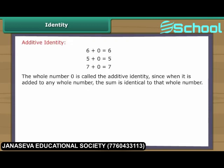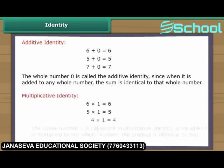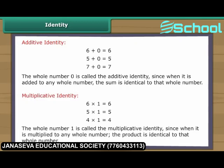The whole number zero is called the additive identity, since when it is added to any whole number, the sum is identical to that whole number. The whole number one is called the multiplicative identity, since when it is multiplied by any whole number, the product is identical to that whole number.